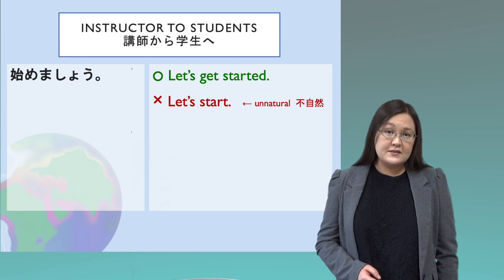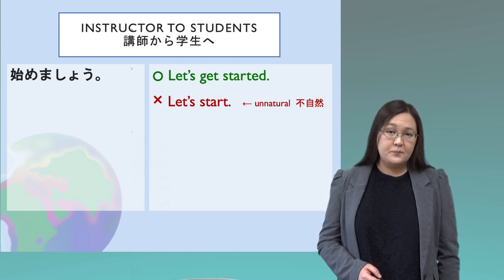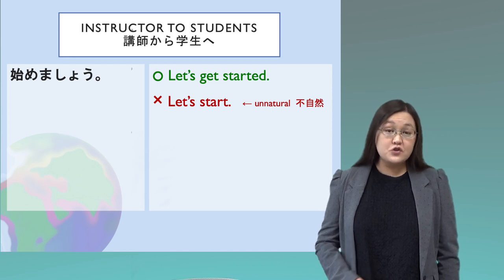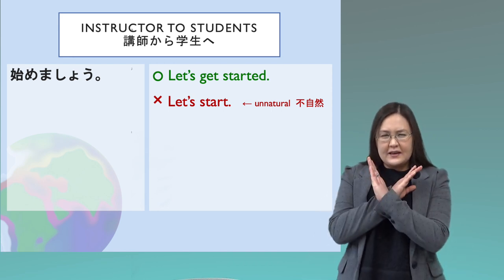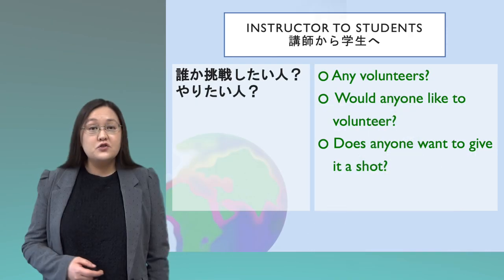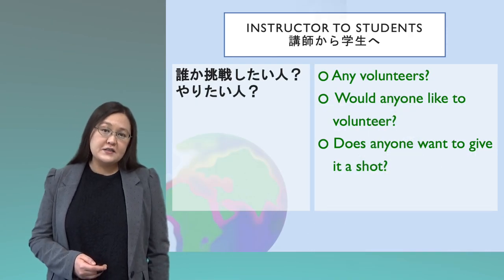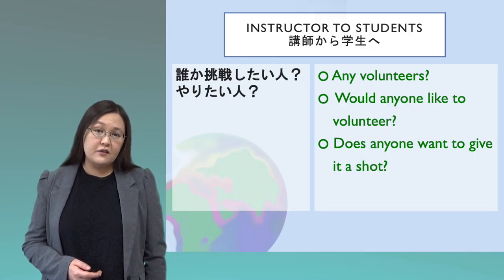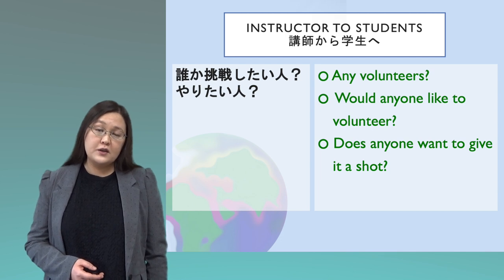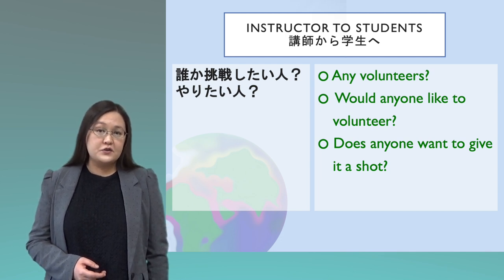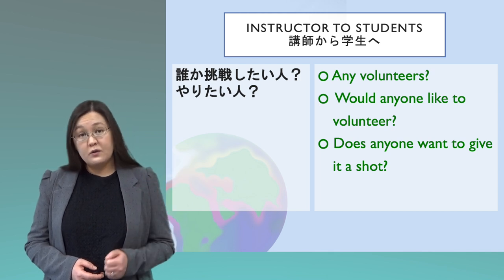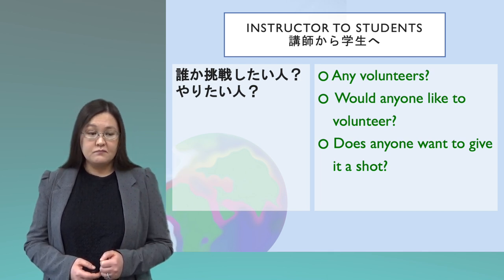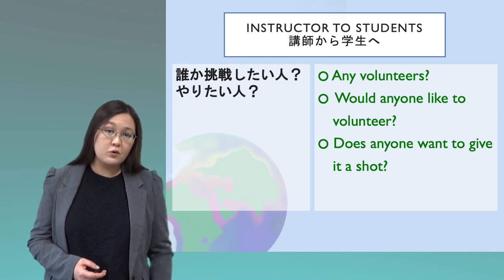To start class, the instructor might say, 'Let's get started.' This is natural English — it is much more natural than to say 'Let's start.' The instructor will often ask for volunteers to share your opinion or your answer, such as: 'Any volunteers?', 'Would anyone like to volunteer?', or 'Does anyone want to give it a shot?'